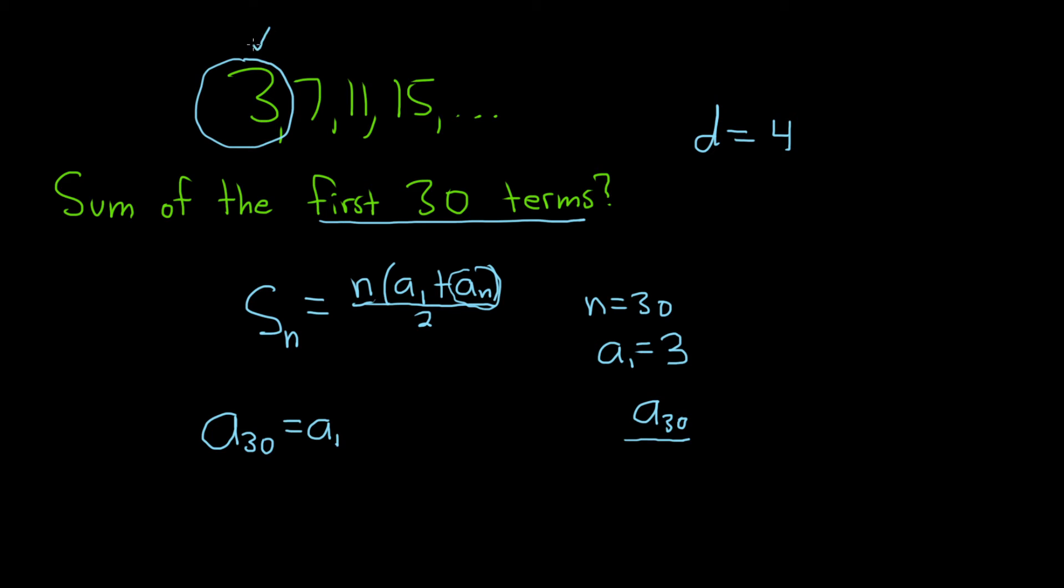Well, if you're at the first term and you want to get to the second term, you add it once. If you want to get to the third term, you add it twice. If you want to get to the fourth term, you add it three times. So to get to the 30th term, you add it 29 times. And it's pretty easy. You can just subtract 1. 30 minus 1 is 29.